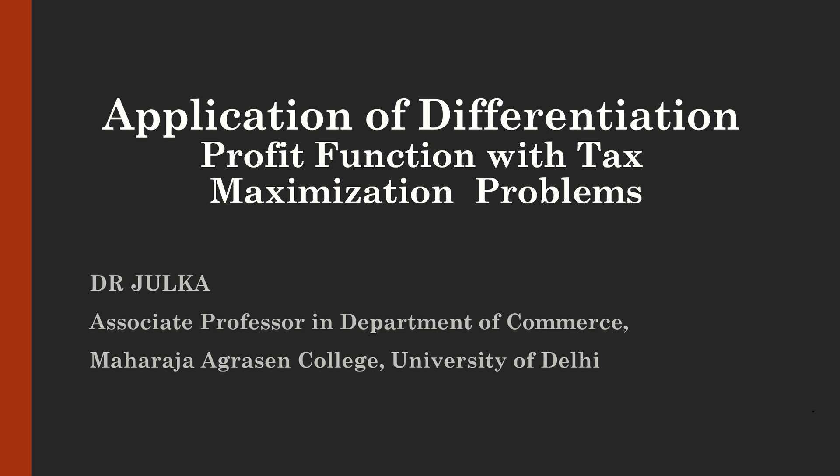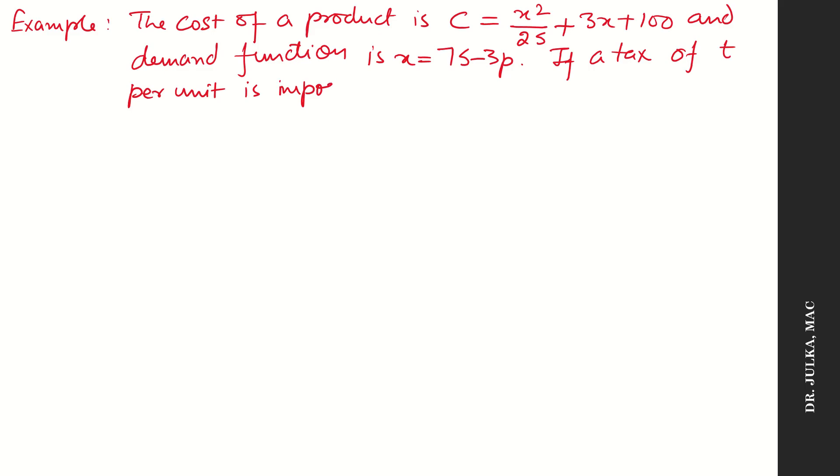Hello everyone, I am Arun Julkar. Today we will discuss maximization problems of profit function when tax component is given to you in application of differentiation. Example 1: The cost of a product is C equals to x squared by 25 plus 3x plus 100, and demand function is x equals to 75 minus 3p. If a tax of t per unit is imposed by the government, determine the output and price that maximize profit.